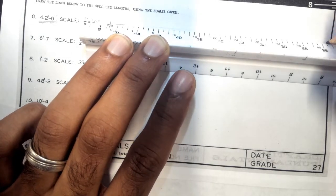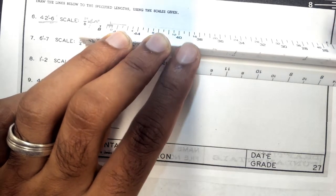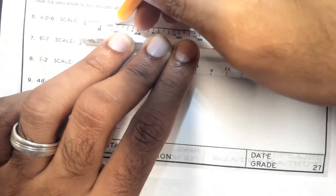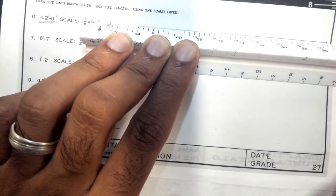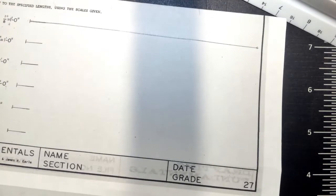My line starts here, right at that mark. And then I'm going to draw my line all the way across. So that line is 42 feet, 6 inches. Please like, subscribe, and comment below.